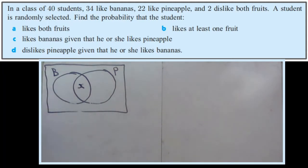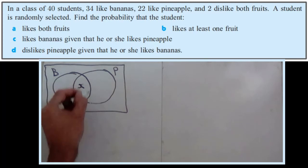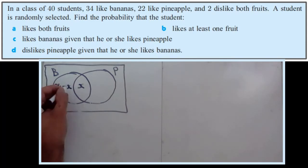But we do know that 34 like bananas. Well, 34 are in here, this whole circle. So to make that work, this number must be 34 minus X, because that means that 34 minus X plus X does equal 34. So there's 34 total in that circle.